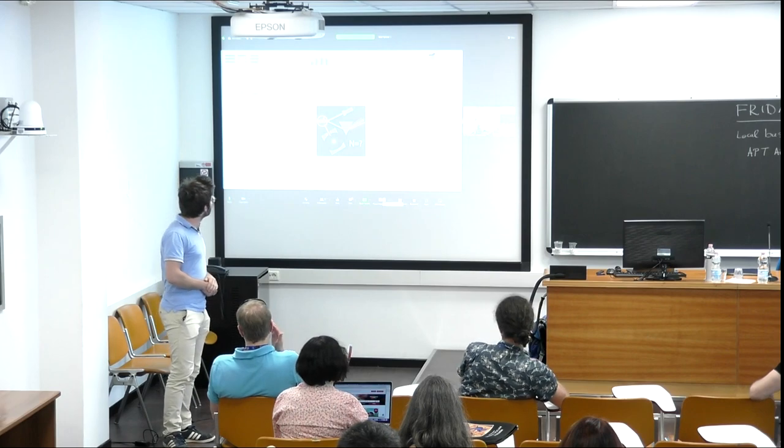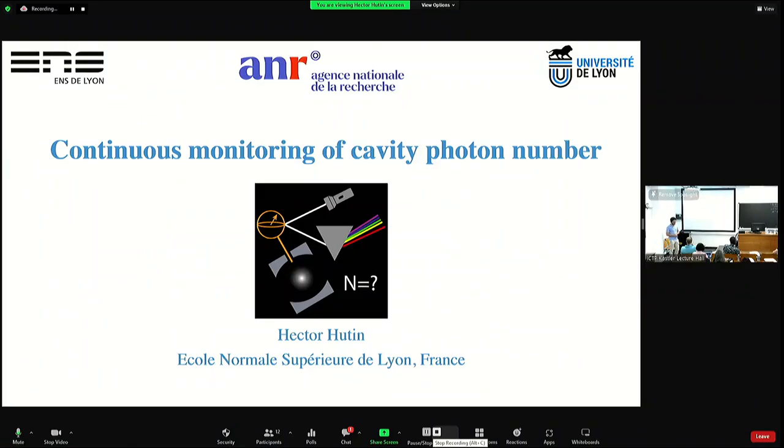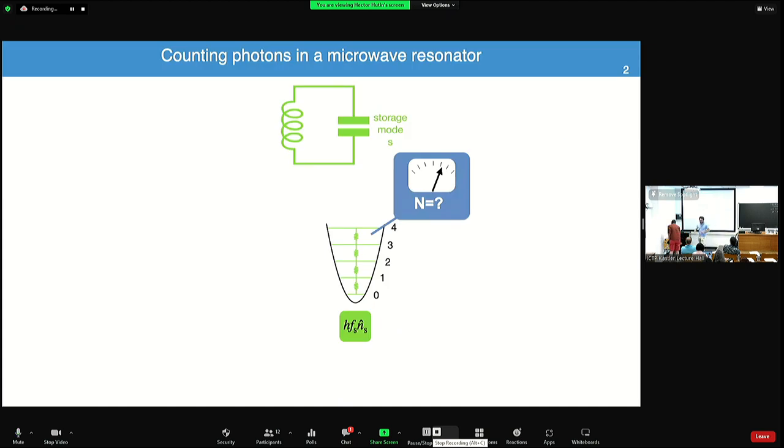So what I'm going to talk about today is about how we can use a qubit to answer a question that has more than two outcomes. And eventually, take that as an example, the continuous monitoring of a cavity photon number. And my slides are already stuck. It's working now.